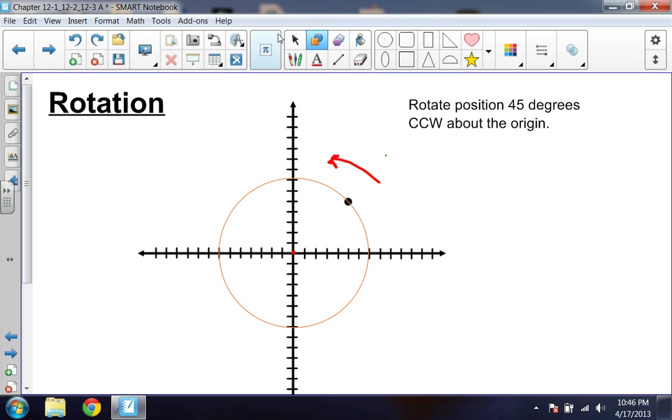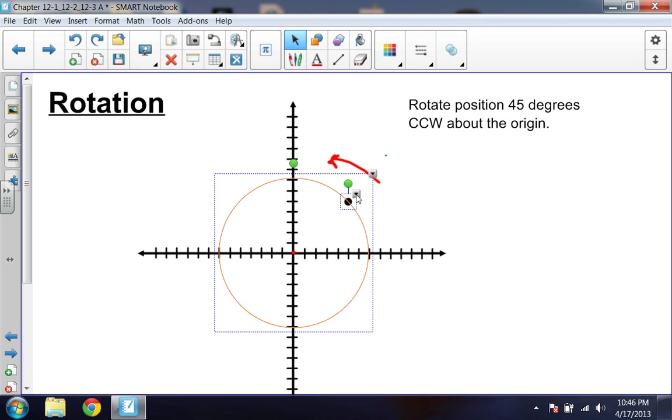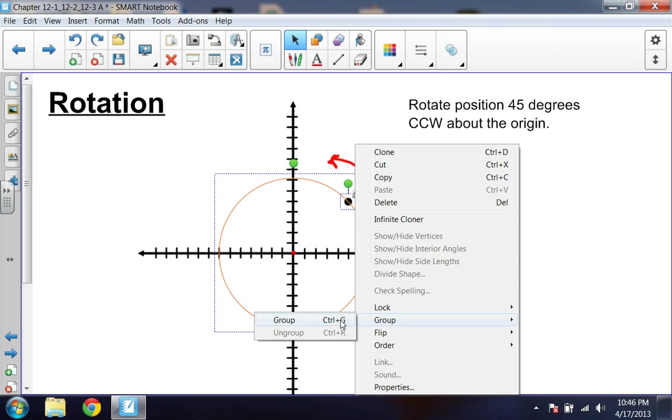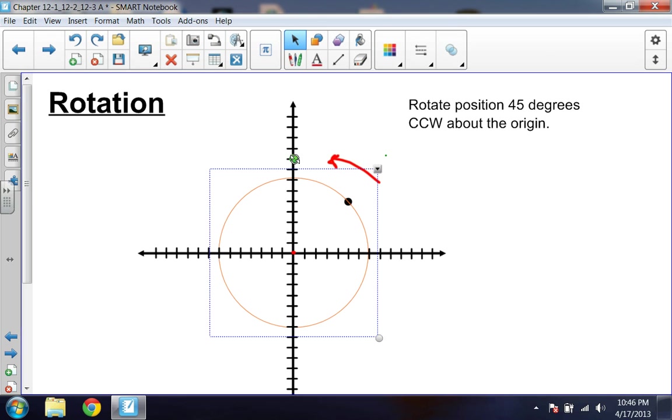So when I rotate, I want to keep this thing 5 root 2 units away from the center. So I'm going to group these two things together so I can rotate them together. I'm going to rotate it 45 degrees counterclockwise about the origin. That means that I do this rotation here. Here's 45 degrees. And boom, that's my new point. And what is that new point? Well, it looks like it's at about 0, 6, but really it's at 0, 5 root 2, right? So you'd probably have to label that coordinate point.